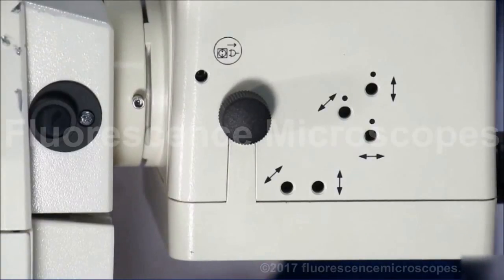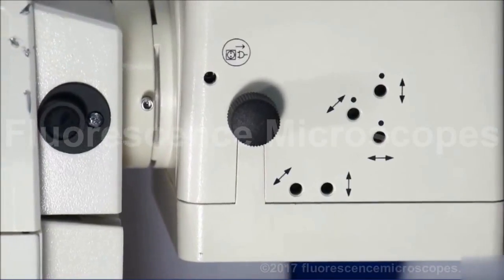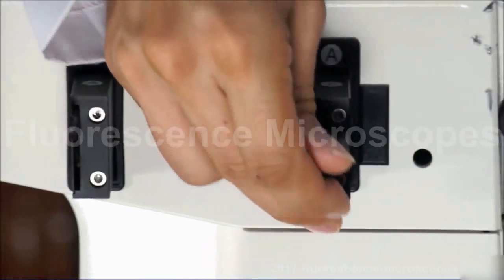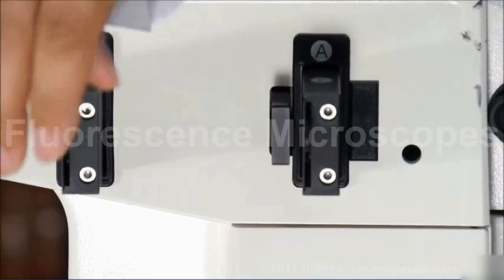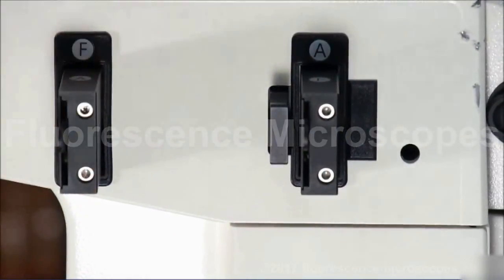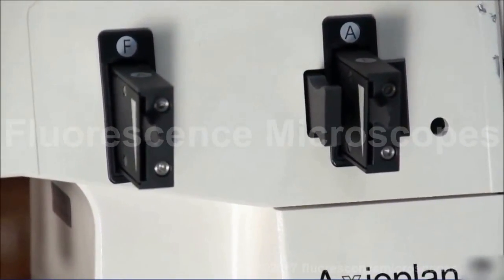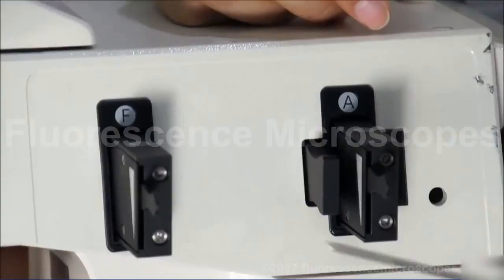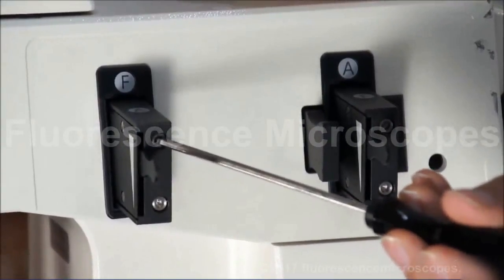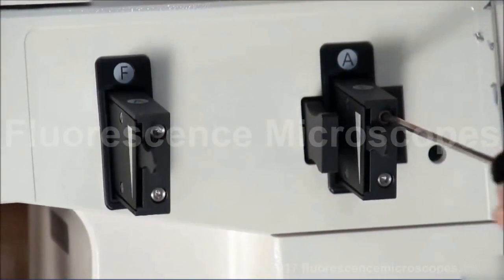We also have an aperture and a field stop iris diaphragm. This is how you control the iris on it. And here's your centering. They each have centering knobs, 3mm hex.